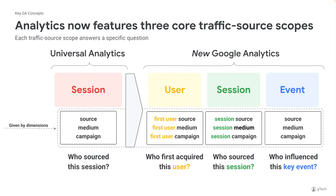In closing, Analytics now has three different scopes — user, session, and event — and you should now have a good understanding of when they are useful and how to pull reports using these different scope dimensions.